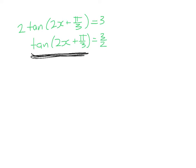Right, so we get 2 tan of 2x plus π on 3 is equal to 3, and dividing through by 2, we get tan of 2x plus π on 3 is equal to 3 over 2. So what have I got here? Well this is some kind of graph related to tan.